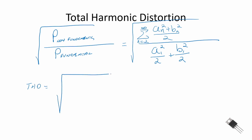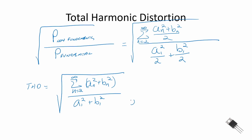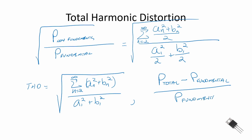The total harmonic distortion equals the square root of the sum from n equal 2 to infinity of (a_n squared plus b_n squared), all over (a_1 squared plus b_1 squared). We often multiply this by 100% to express THD as a percentage. We can also find THD by taking the square root of (total power minus power in the fundamental) divided by the power in the fundamental, also multiplied by 100%.